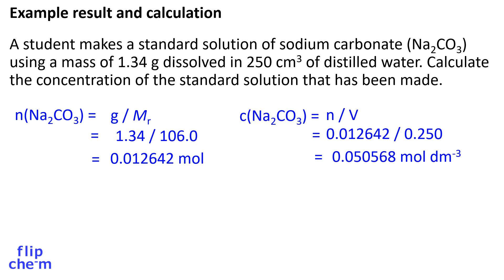Next, the concentration is found using: concentration is equal to amount divided by volume. We need to convert volume from centimetres cubed to decimetres cubed, which is done by dividing by 1000. The concentration of the solution is 0.050568 moles per decimetre cubed. I have left the result to five significant figures because it may be used in future calculations.